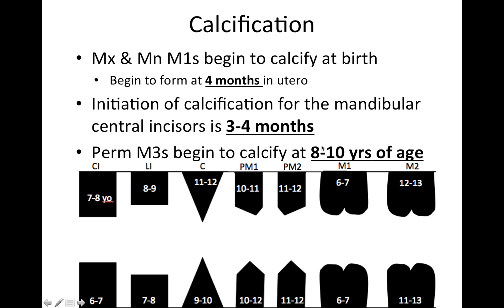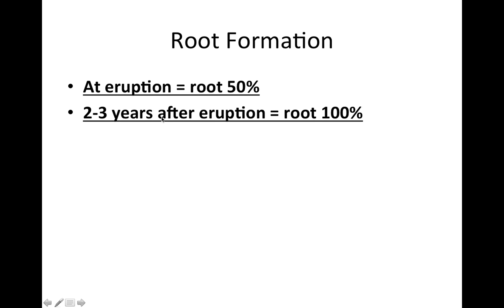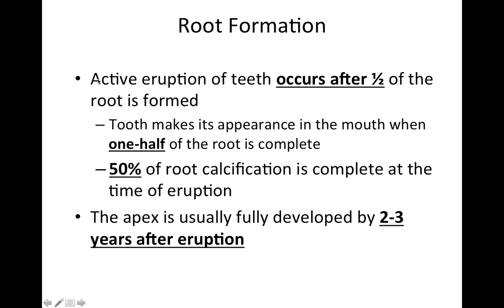The permanent third molars begin to calcify at eight to ten years of age. Root formation general rule: at eruption, you're going to have 50% of the root formed, and then two to three years after eruption, you'll have 100% of the root. Some tricky wording you might see: 'Active eruption occurs after half of the root is formed.' 'The tooth appears in the mouth when one half of the root is complete.' '50% of root calcification is complete at the time of eruption.' 'The apex is usually fully developed two to three years after eruption.'